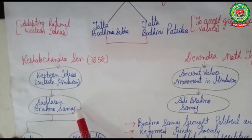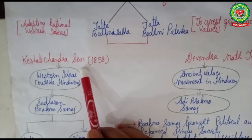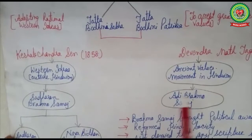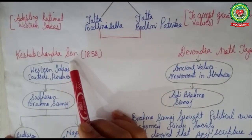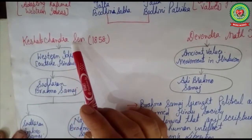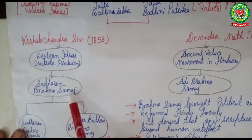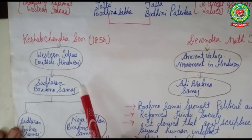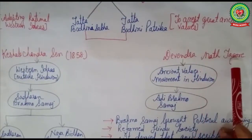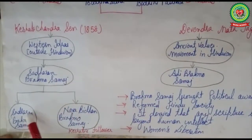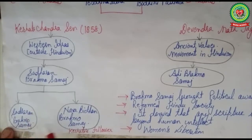Due to this controversy, Brahmo Samaj was divided into two parts: Sadharan Brahmo Samaj under Keshab Chandra Sen, and Adi Brahmo Samaj under Debendranath Tagore. The Sadharan Brahmo Samaj became more popular in India, especially in Bengal, where the renaissance was ongoing and people were more inclined towards western ideas. Further, the Sadharan Brahmo Samaj was divided again into Sadharan Brahmo Samaj and Nava Vidhan Brahmo Samaj.